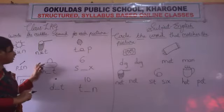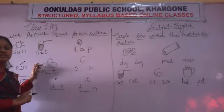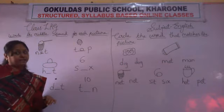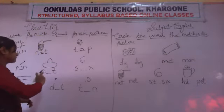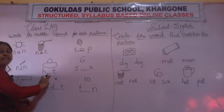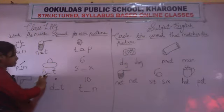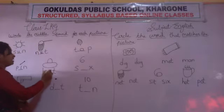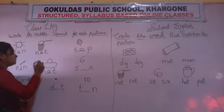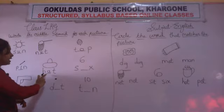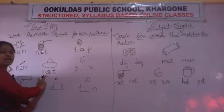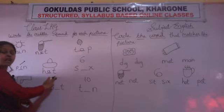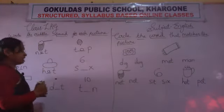Now look at here. What picture is this? This is picture of hat. Which sound is coming? So what you will write here? A.